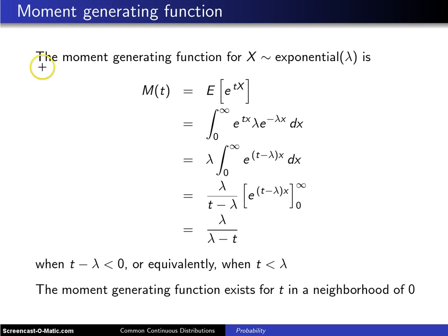Here is a derivation of the moment generating function for a random variable x that has an exponential distribution with positive rate parameter lambda. By definition, the moment generating function is the expected value of e to the tx.